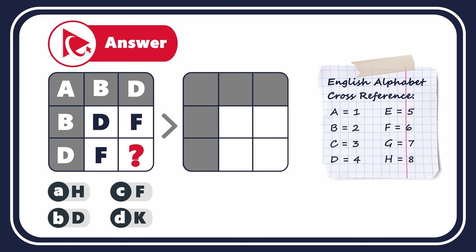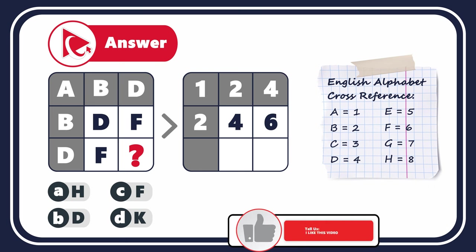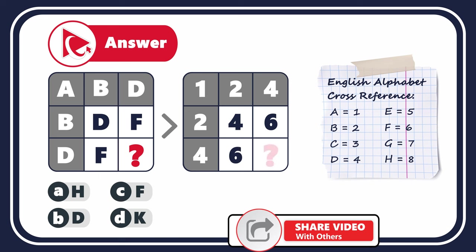For the first row, the numbers are 1, 2, and 4. For the second row: 2, 4, and 6. And for the third row: 4, 6, and the missing number to be determined.